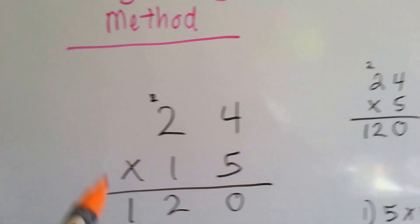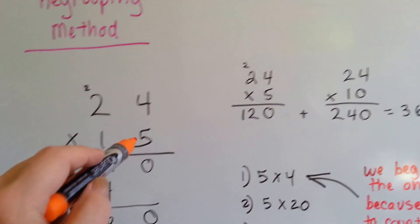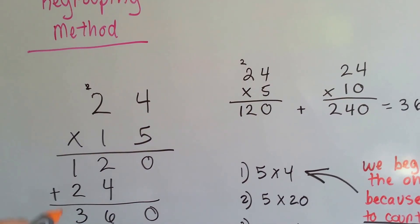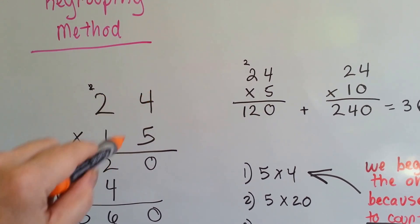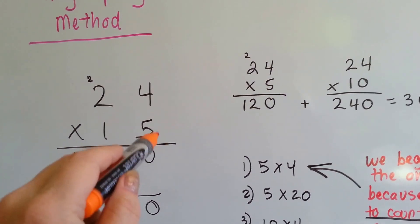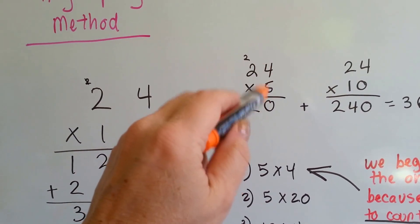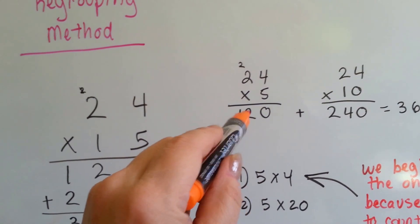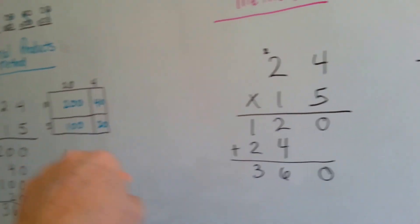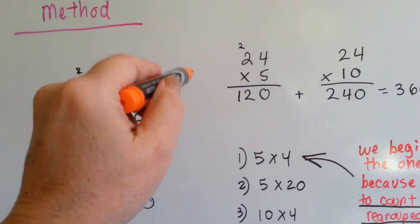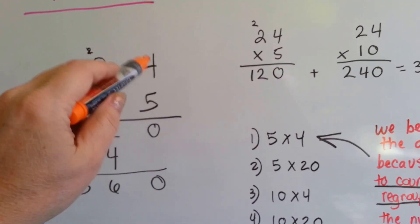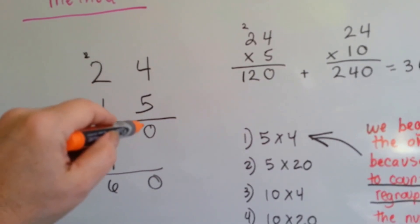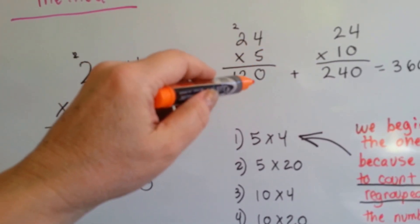So here's the regrouping method. We're going to multiply the 5 to the 4 and then to the 2, and then we're going to multiply the 1 to the 4 and to the 2. When we multiply the 5 to the 4, 5 times 4 is 20. Here's the regrouping. We can't write 20 down here like we did in this method. We're going to regroup and put it onto the next place value. So 5 times 4 is 20. We carry the 2 over to the tens place and put our 0 down.